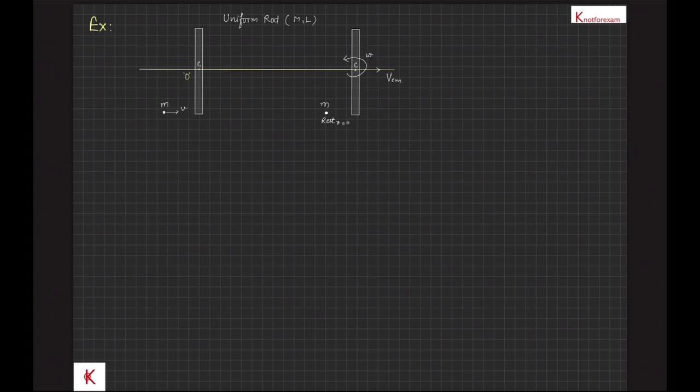We want to find out the angular velocity of the rod just after the collision. Initial linear momentum of the system pi is m into v and final linear momentum pf will be m into vcm as shown. By linear momentum conservation, initial linear momentum pi is equal to final linear momentum pf and therefore vcm is equal to mv upon m.